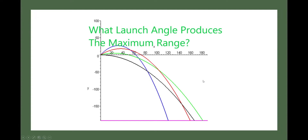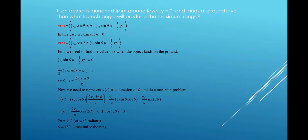A lot of people think that 45 degrees will maximize the range, but what happens is 45 degrees maximizes the range if you're landing at the same height as you were launched from, but not otherwise. In fact, we can show that if you do land at the same height as you were launched from, it's pretty easy to show that 45 degrees does maximize the range.